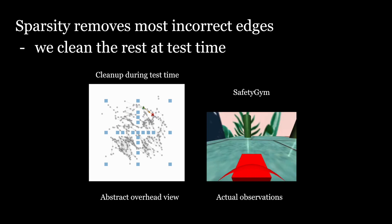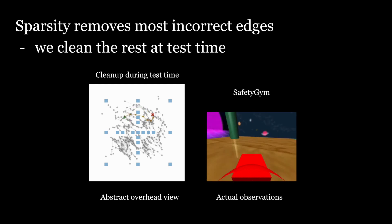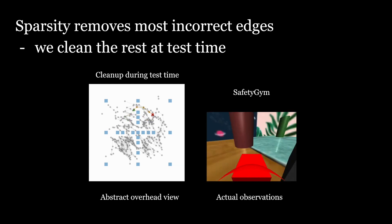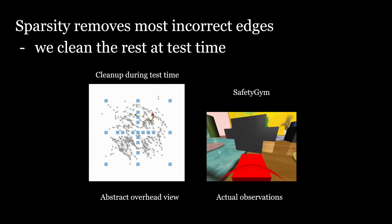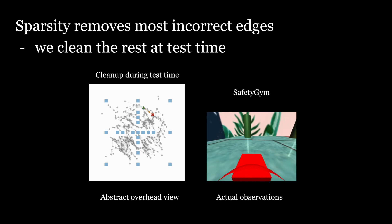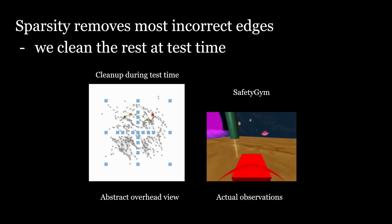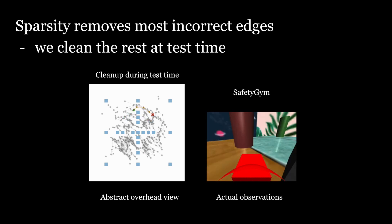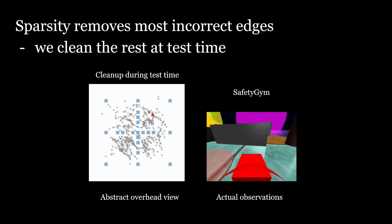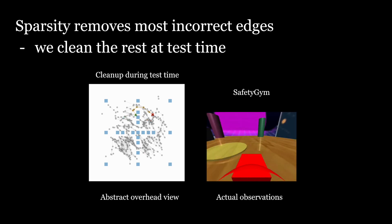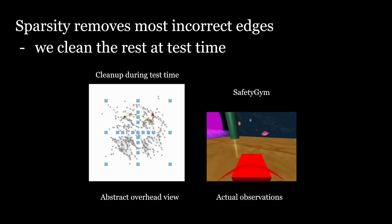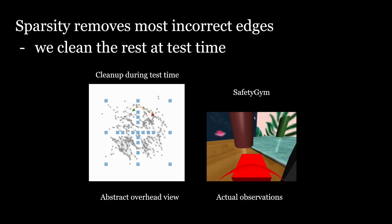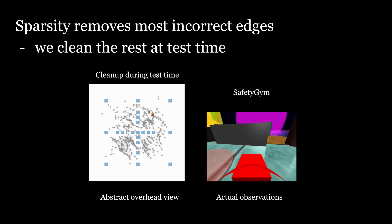The agent can also self-correct when its plan is infeasible. When it gets stuck, the agent removes the infeasible transition from the graph and replans until it reaches its goal. This sort of self-supervised cleanup is only possible if the graph size is small.